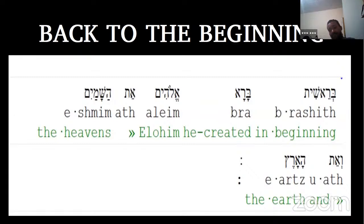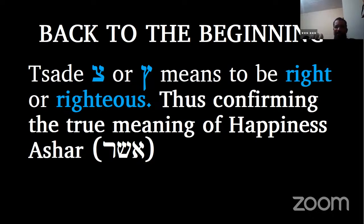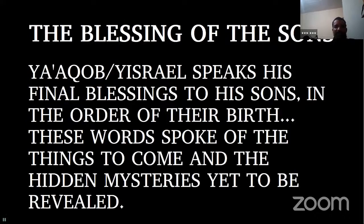The Tzadeh, the ending symbol, in Hebrew means to be righteous, thus confirming the true meaning of happiness. Tzadeh means to pursue, to seek — and it's connected to righteousness. It's interesting that when we count by nines we get the word Ashar meaning to be happy, and happiness is connected to being righteous. These are not just letters — they are words. And right there beside it is the word connected to righteousness.